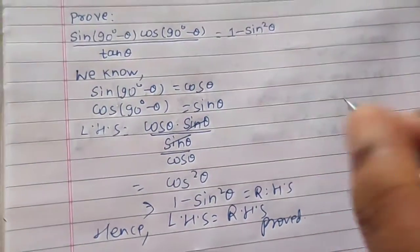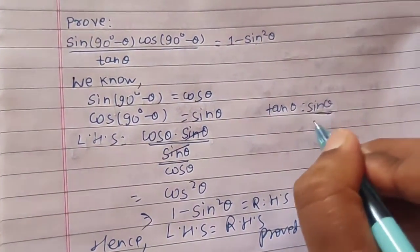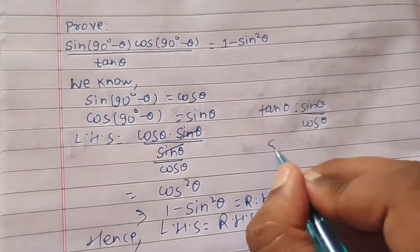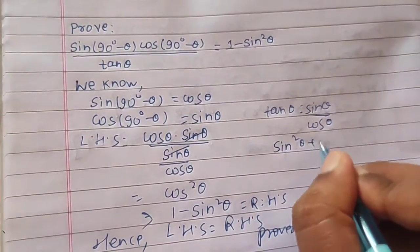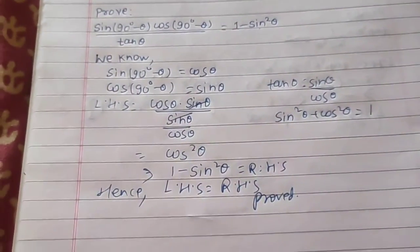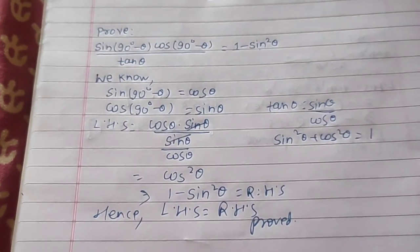The formulas we used here are: tan θ = sin θ / cos θ, the complementary angle identities, and sin²θ + cos²θ = 1. These three formulas gave us our required result.